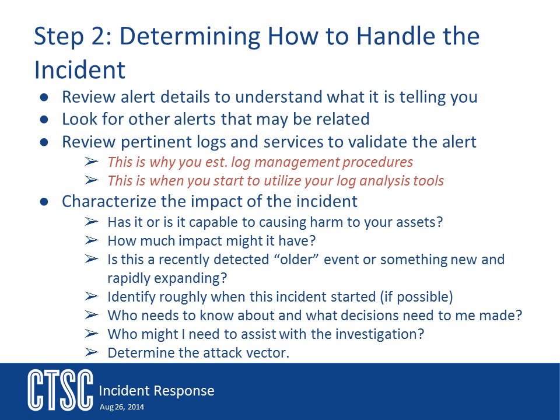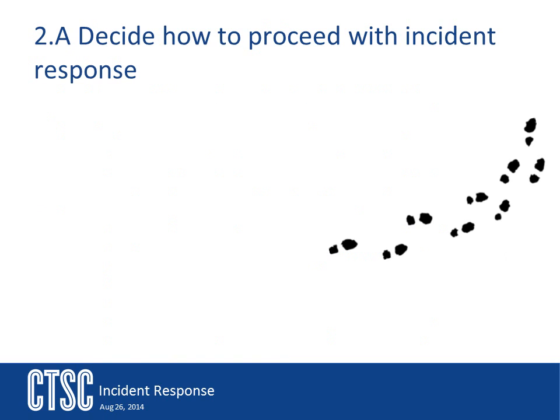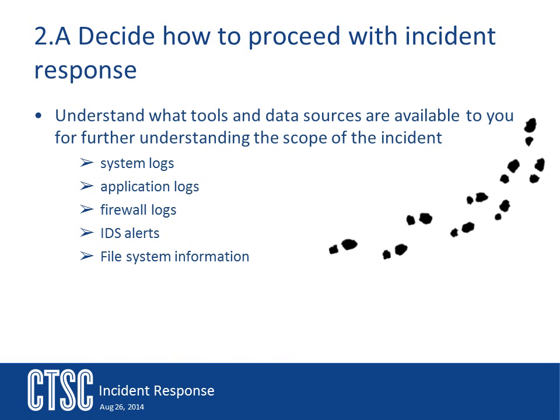Once you have a characterization of your incident, you need to start pulling together the information you have to really look at the incident in detail. Begin gathering your information — you might need to move it to a different location in order to better examine it or better protect it. Most likely this will be all your various log files, the logs you identified as important ones during your initial preparation phase. Things like firewall and NetFlow logs usually have a very short lifespan, so you will want to get those as quickly as possible and move them to a secure storage location.